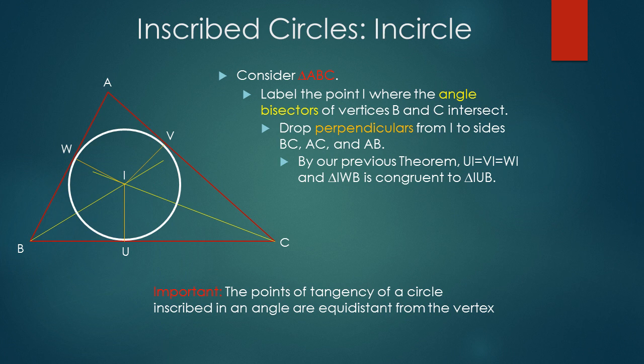The most important part here is that the points of tangency of an inscribed circle, or U, V, and W in our case, are equidistant from the vertex B or C. That is, BW is equal to BU, or CU is equal to CV.